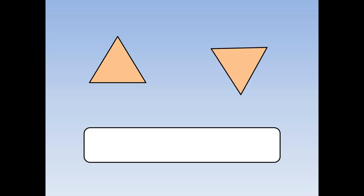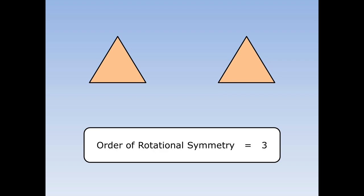Here's a triangle. What's its order of rotational symmetry? I draw a copy next to it and then start to rotate 360 degrees. How many times will it look the same? One, two, three. The order of rotational symmetry is three.